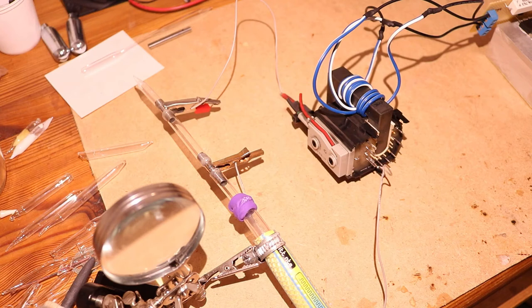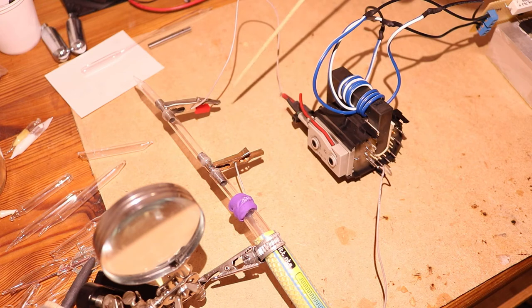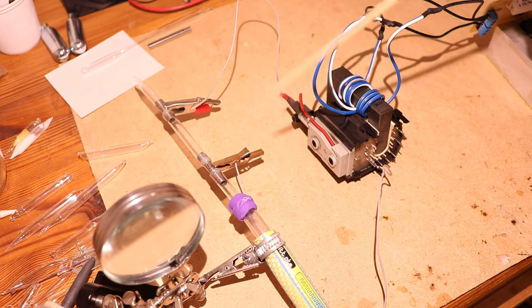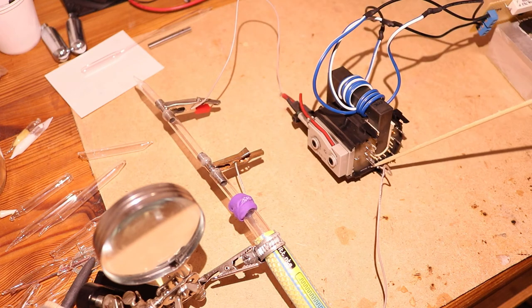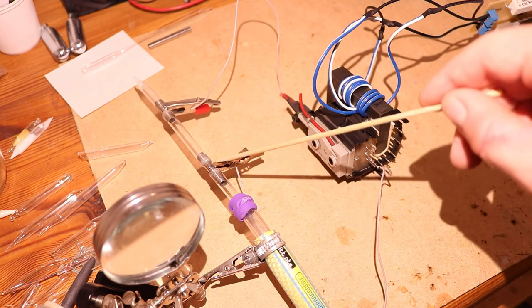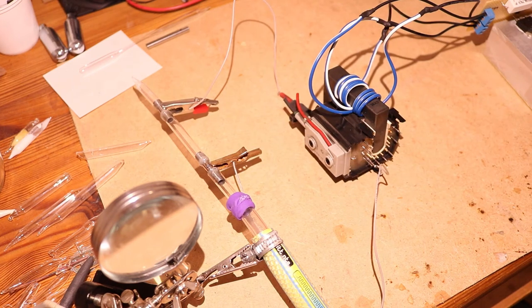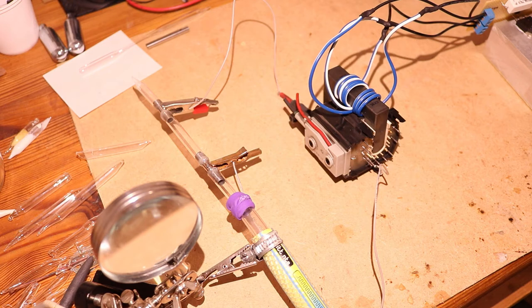Alright I have everything hooked up. The red wire that goes out here is connected to this part, and the ground wire is connected to this part. Alright I will switch off the light, turn on the pump and let it pump down, and then I will turn on the high voltage.